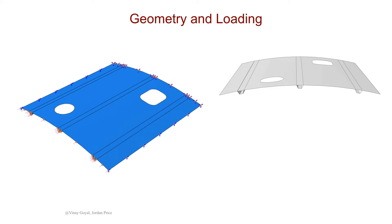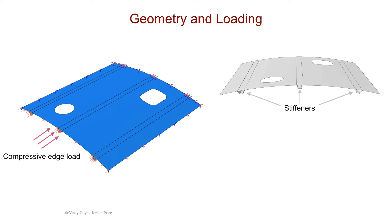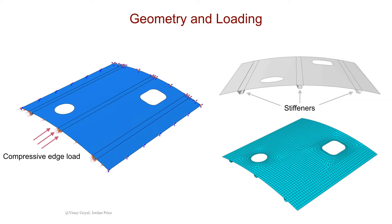The buckling analysis covered in this video will involve a stiffened thin shell composite panel. Two cutouts are made through the panel, and three stiffeners are added to increase stability. A compressive load is applied to one edge, and motion is constrained with pinned symmetry and fixed displacement boundary conditions. For the mesh, we'll use four-node conventional shell elements and do a bit of mesh refinement around the holes.